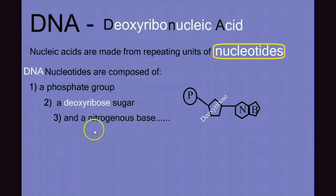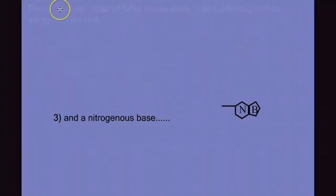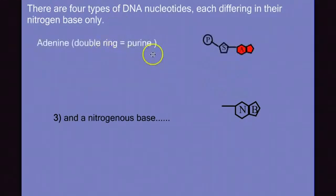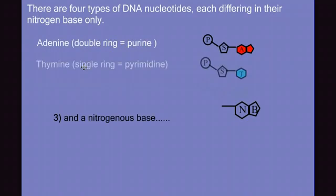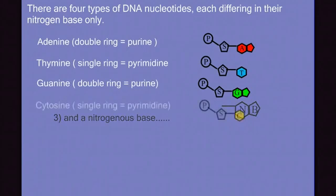Now let's take a closer look at these nitrogenous bases. There are four different types of DNA nucleotides, each differing in their nitrogen base only. There's our double-ringed adenine, it's a purine. We have thymine, which is a single ring. You can see the rings out here. We call the single-ringed nucleotides pyrimidines. We have guanine, our double-ring, another double-ringed purine. And finally, cytosine, another single-ringed pyrimidine.